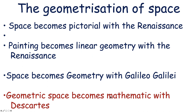In summary: space became pictorial with the Renaissance; painting became linear geometry with the Renaissance; space became geometry with Galileo Galilei; and geometry — or space — became mathematics with Descartes.